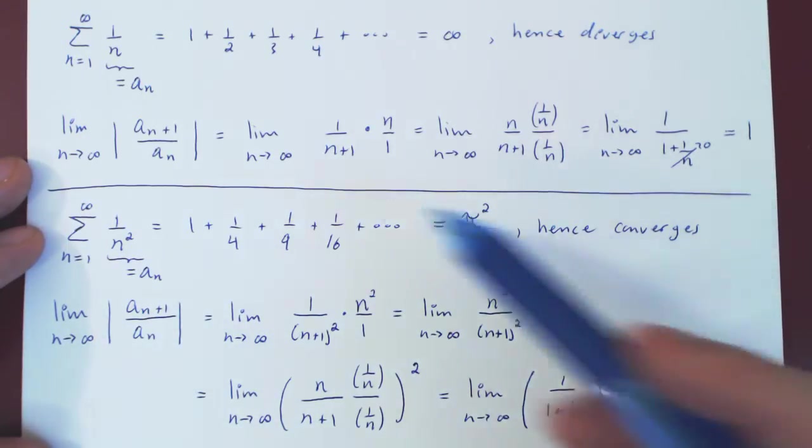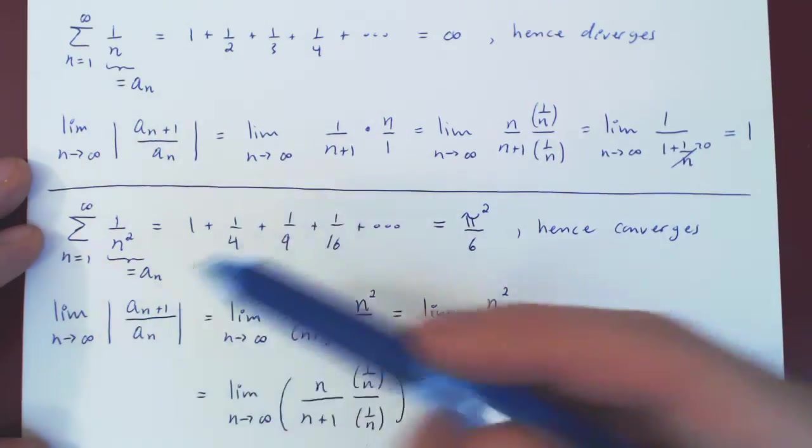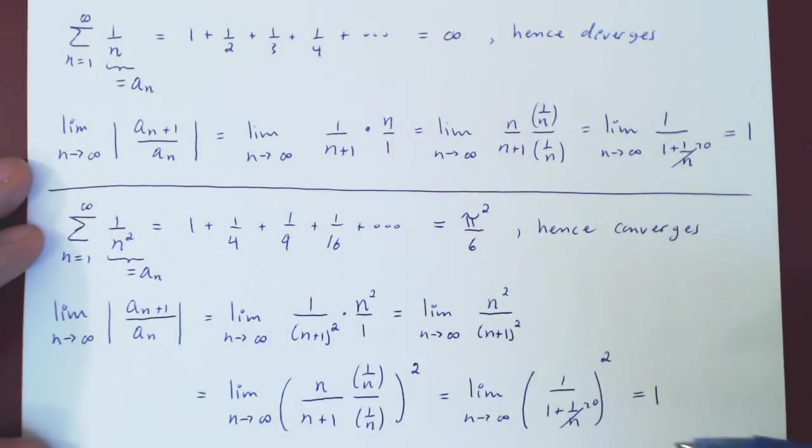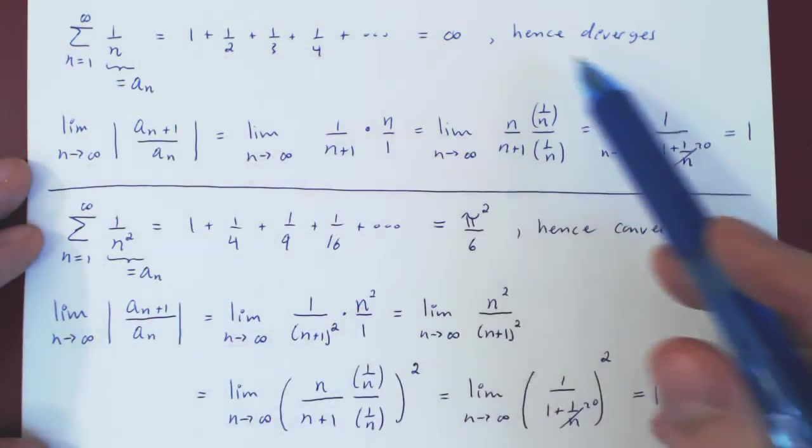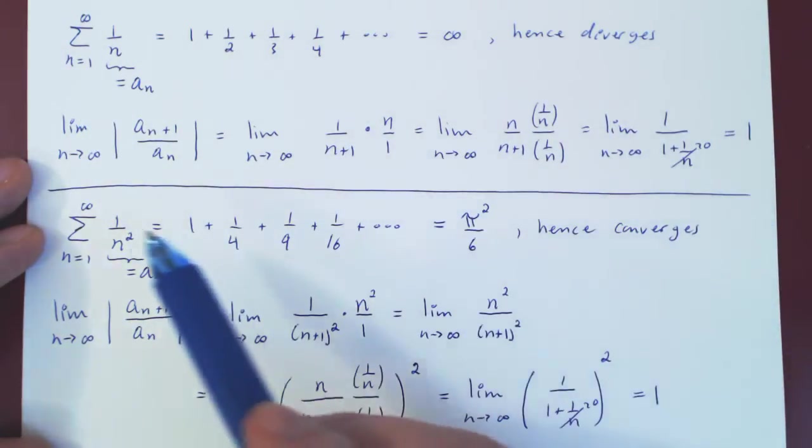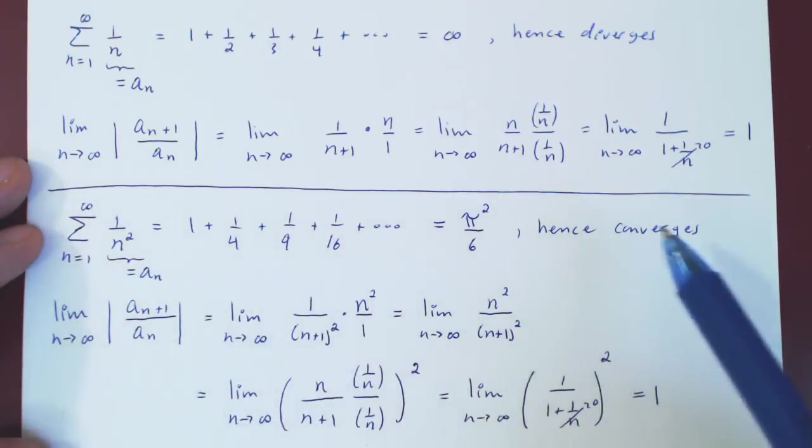And so you see, when you try to apply the ratio test and the limit is 1, you cannot conclude anything. As here's an example where the series diverges, and here's an example where the series converges.